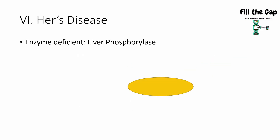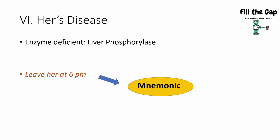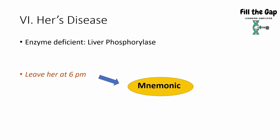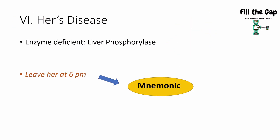The sixth one is Her's disease. The enzyme deficient is liver phosphorylase. The mnemonic is 'leave her at 6 p.m.' — as if asking someone to drop her off at 6 p.m. 'Leave' helps you remember liver phosphorylase, 'her' helps you remember Her's disease, and '6 p.m.' reminds you this is the sixth disorder.